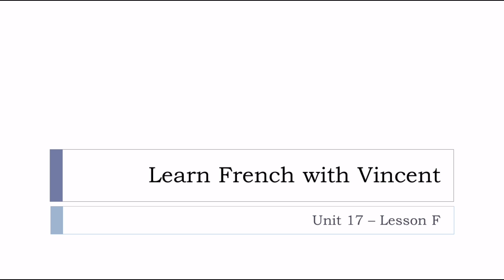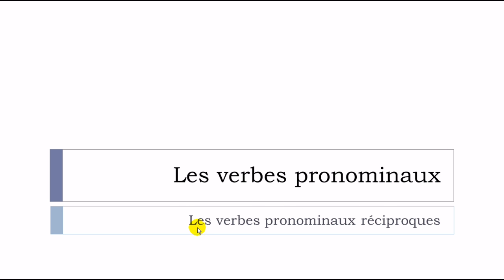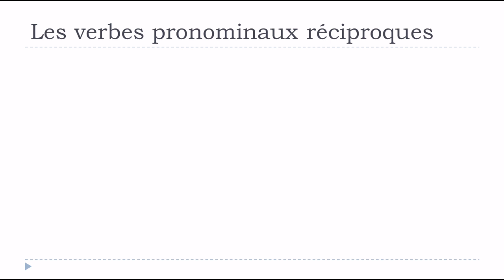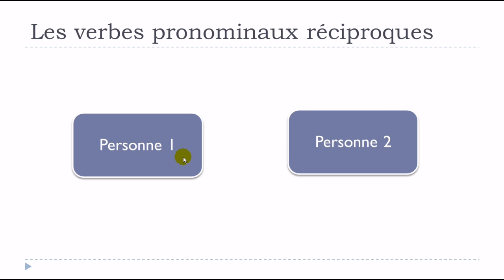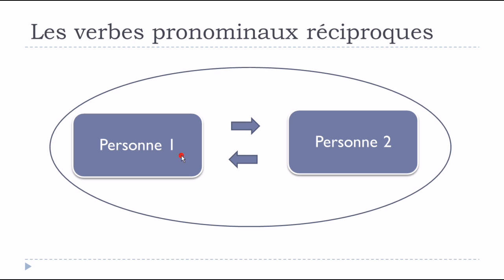Bonjour à tous and welcome to Learn French with Vincent. This is Unité 17 Leçon F. We'll see les verbes pronominaux réciproques. We saw les verbes pronominaux réfléchis previously; now we focus on réciproques. The key concept: you need two persons — personne numéro un and personne numéro deux — and each person does something that affects the other.